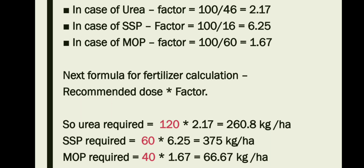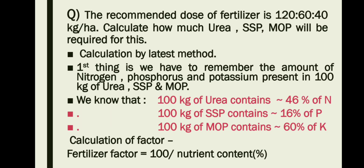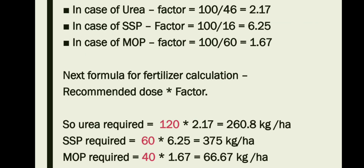Now it is very easy to calculate the fertilizer dose. We simply multiply the recommended doses by the respective factors: urea 120 × 2.17, SSP 60 × 6.25, and MOP 40 × 1.67. We get 260.8 kg per hectare for urea, 375 for SSP, and 66.8 for MOP. These are the required doses.